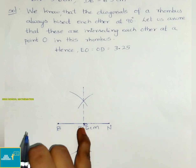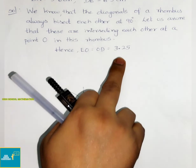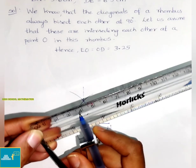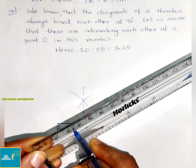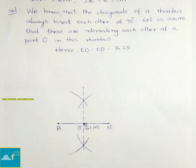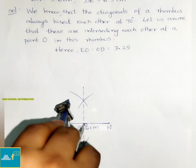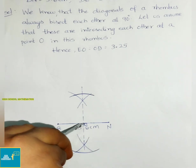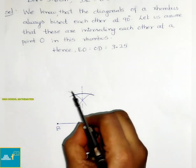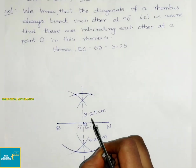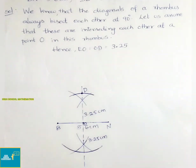With O as center, draw arcs of radius 3.25 cm to intersect the perpendicular bisector. Take 3.25 cm — between 3.2 and 3.3. Each part on either side of O is 3.25 cm. Mark these intersection points as D and E.